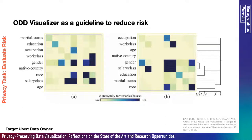Next we discuss the privacy task of evaluating risk. In order to make a dataset public, the data owner must evaluate the risks associated with that dataset. This is an interface developed by Kao et al. named ODD Visualizer, which will help in this task. From the image on the left-hand side, we can see that gender, race, and salary class have the highest protection against privacy leakage, while the most key-anonymous values of the country have the lowest.